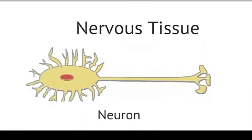Nervous tissue is the last category. This tissue includes neurons and supporting cells. The function of neurons is to both receive and send electrical impulses, called action potentials. These neurons establish an electrical communication system within the body. These are the four categories of tissues that make up the organs and other structures of our body.